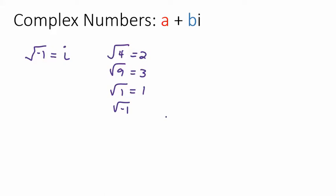That's true in the real numbers — there's no real number that is the square root of a negative number. But in the complex numbers we do have answers to the square roots of negatives, and this is our big key: the square root of negative 1 is i.